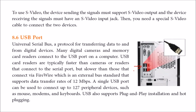These are the USB ports — as you can see, there are four USB ports. We have come up to USB 3.1, which offers very high speeds. USB stands for Universal Serial Bus and is a protocol defining the guidelines and the electronic and physical characteristics. Various digital cameras and memory card readers are connected via USB port, and USB card readers are typically faster than camera readers that connect to the serial port.